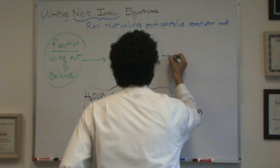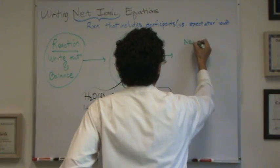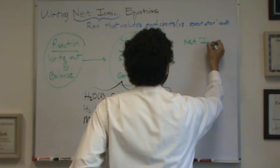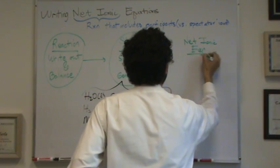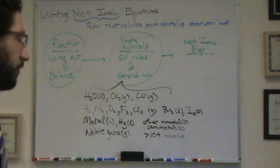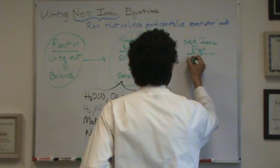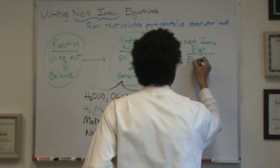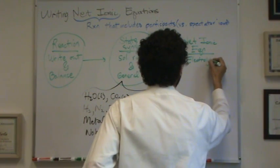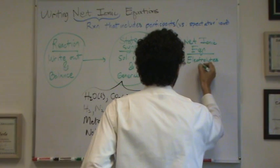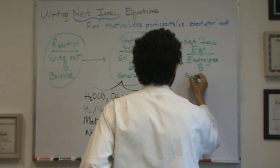Your last step is centered around the net ionic equation. Net ionic equation. And what you want to do here is identify electrolytes. Remember that from last class and before. Electrolytes. And spectator ions.